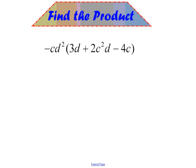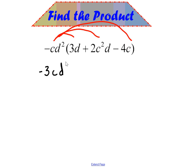Next up, same exact thing here. The one trick on this problem is you want that negative sign — think of that like a negative 1. So we really have negative 1 times 3 is negative 3. C times we have no C, so it's going to be C. D squared times D is D to the third.